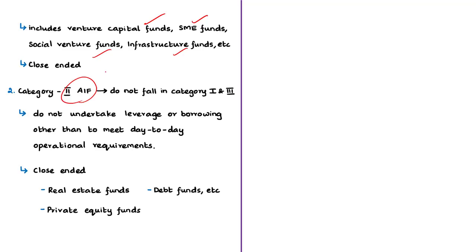The second is Category 2 alternative investment funds. Those AIFs which do not fall in Category 1 or Category 3 come under this category. Further, those AIFs which do not undertake leverage or borrowing other than to meet day-to-day operational requirements are categorized as Category 2. Various types of funds such as real estate funds, private equity funds (PE funds), funds for distressed assets, and debt funds are registered as Category 2 alternative investment funds. In our context, the special window fund will be set up as a Category 2 alternative investment debt fund.